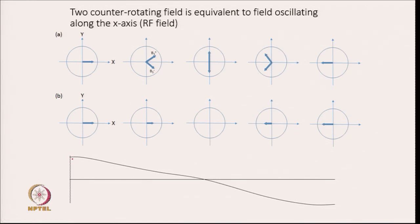How does the RF field do it? It is a bit difficult to understand, but you can think of the RF field as two counter-rotating fields. The RF field starts from some point and then it is like a wave — it is maximum, goes to zero, and then goes to maximum in the negative direction. If we want to look at the effect of the RF field, we need to take the RF field as two counter-rotating fields. And the answer is yes — we can represent it as two counter-rotating fields.